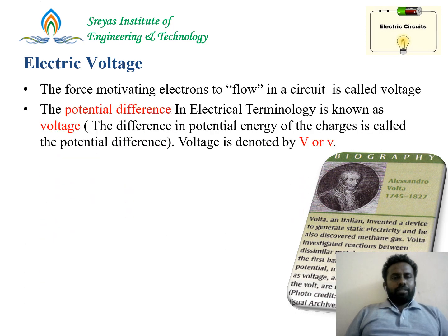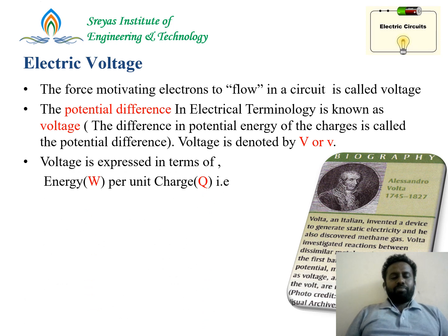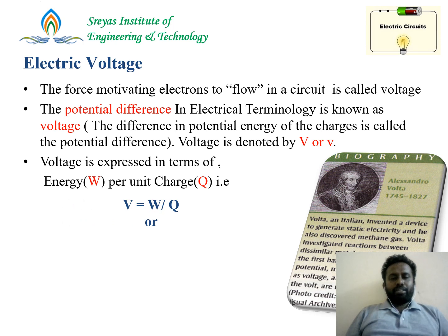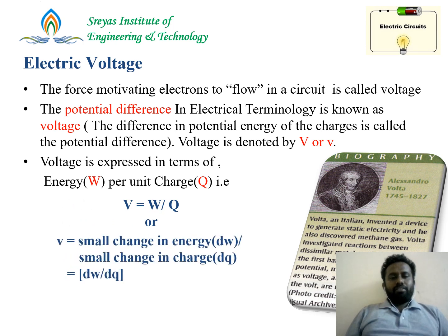Let's see what is electrical voltage. The force motivating electrons to flow in a circuit is called voltage or potential difference. It is a difference in potential energy of two charges. It is denoted by V and the unit is volts. Voltage is the work done in moving a charge from infinity to a desired location, or from higher potential to lower potential. That is, potential is equal to work done per charge.